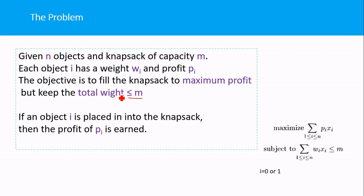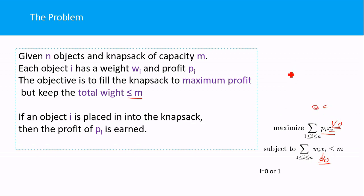In the fractional knapsack problem, you can take a fraction of an item, but in the 0/1 knapsack problem you cannot take a fraction — either you take the entire available item or you leave it. So xi will always be 1 or 0. The objective is to maximize the sum of profit times xi, subject to the condition that the sum of wi times xi is less than or equal to m. In the fractional knapsack, xi can be any value between 0 and 1.